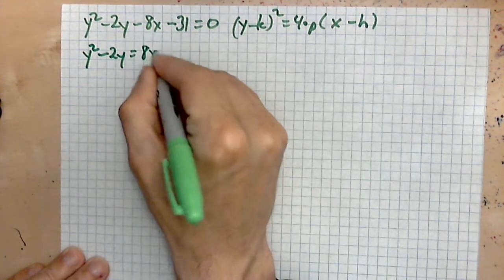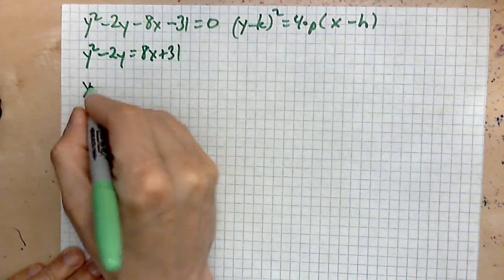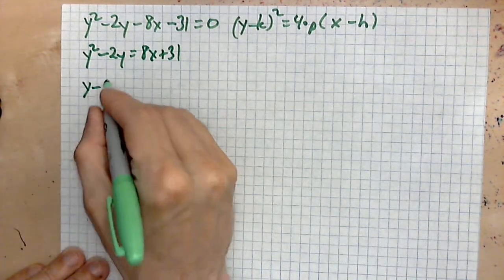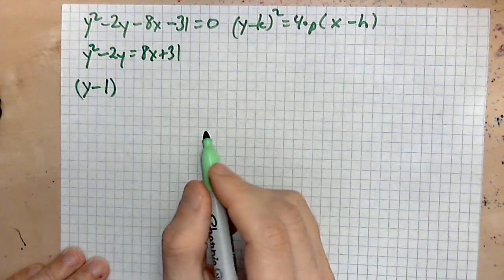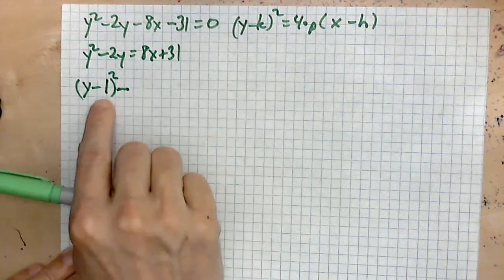Now complete the square, so you have y minus half of the two, which is one, squared. And then don't forget to subtract the square of the negative one, and this equals 8x plus 31.